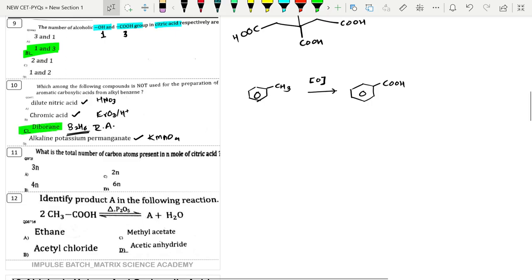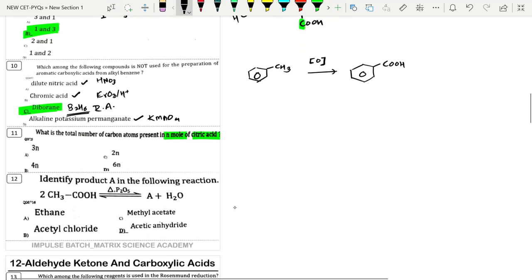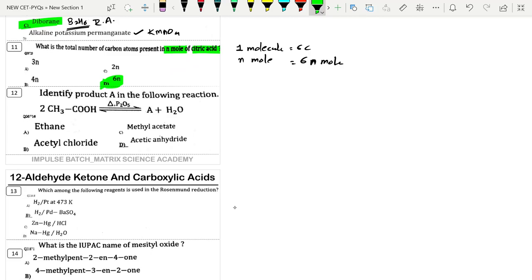Total number of carbon atoms present in n moles of citric acid. Looking at the structure: 1st carbon, 2nd carbon, 3rd carbon, 4th carbon, 5th carbon, and 6th carbon. So we have total 6 carbons.